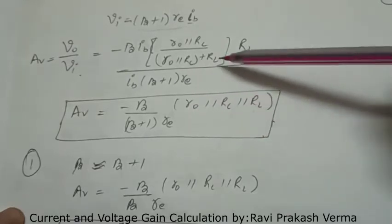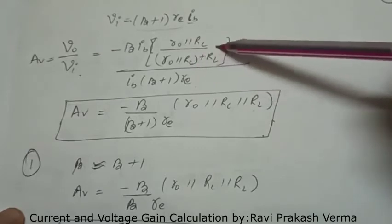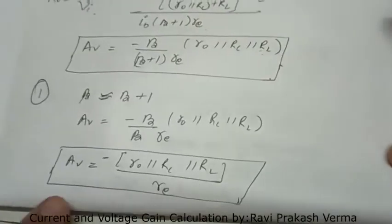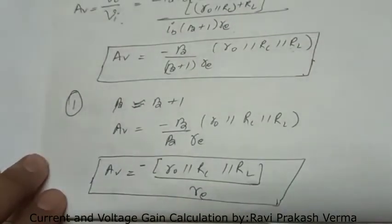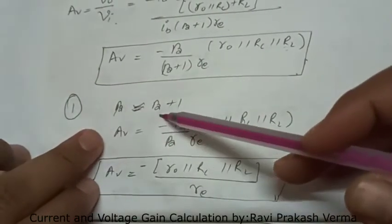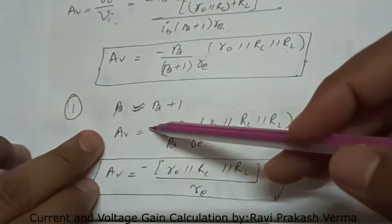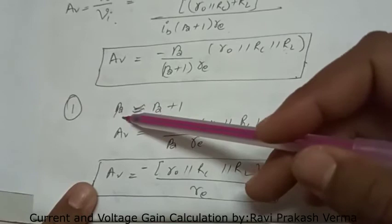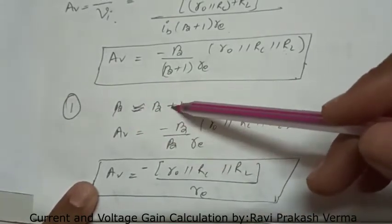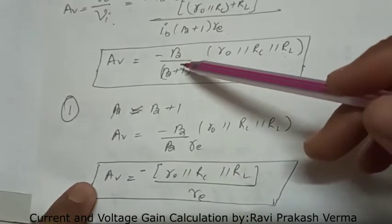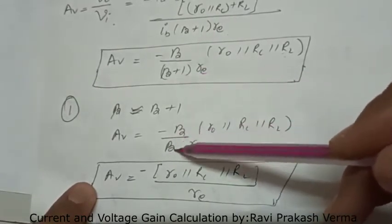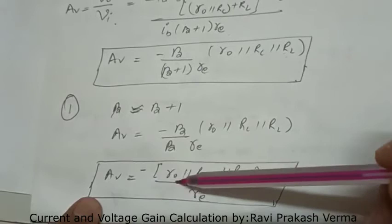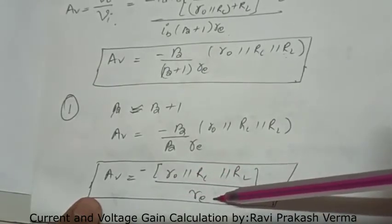These three resistances are in parallel, so this can be written in a simplified form. In the first case of voltage gain, if beta plus 1 is approximately equal to beta (since beta is much greater than one), we replace beta plus 1 with beta. In the denominator, beta cancels with beta, giving the voltage gain A_v equals minus (R naught parallel RC parallel RL) divided by RE.